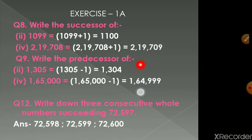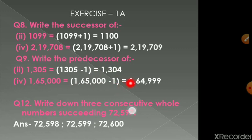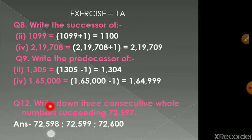Question number 9: write the predecessor. Predecessor means subtracting 1 from the given number. The number is 1305; subtracting 1 gives 1304. The next number given is 1 lakh 65000; subtracting 1 gives 1 lakh 64999.